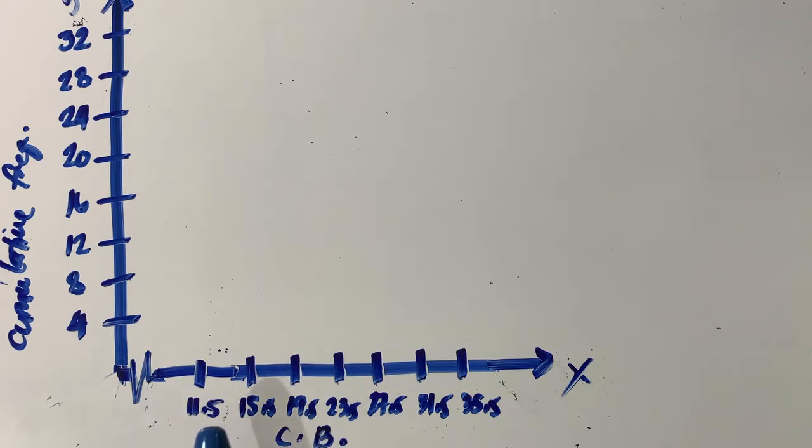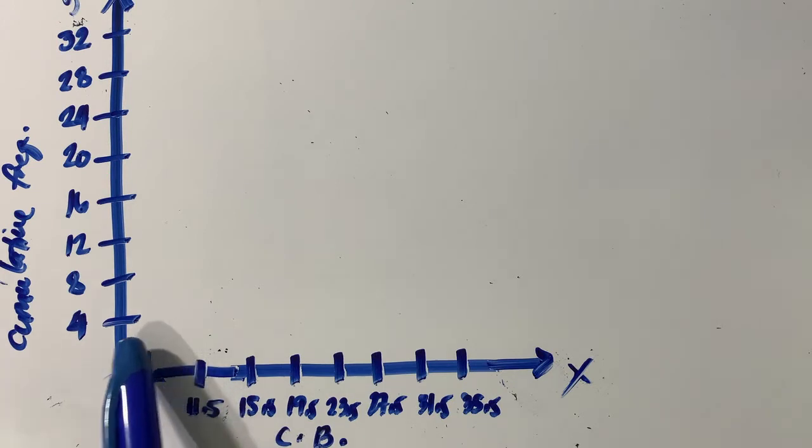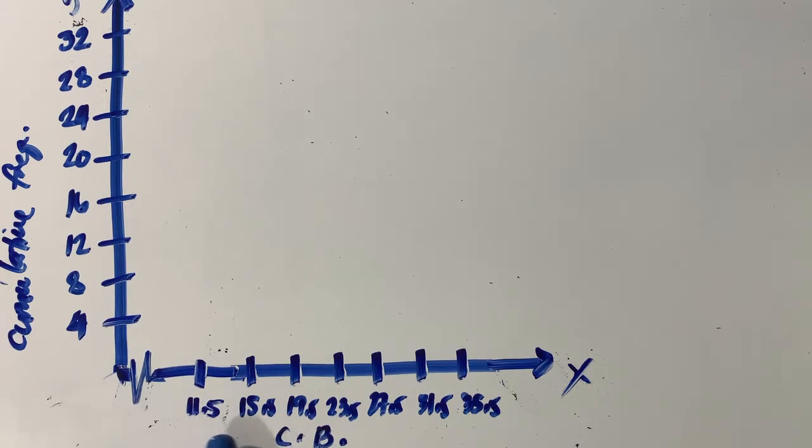If you notice, along the x-axis, I made use of this symbol or squiggle to indicate that we are skipping some values. We proceeded immediately with 11.5 and then proceeded with 15.5 by interval of 4 units.